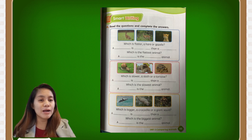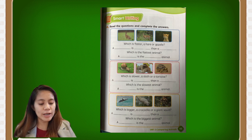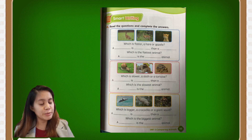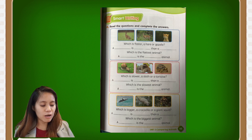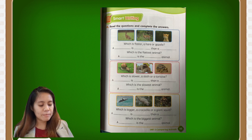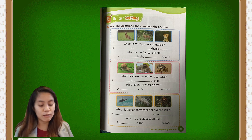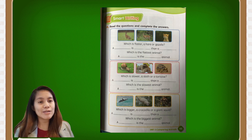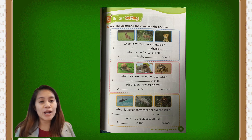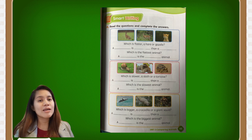For the second picture, we have a snail, a sloth, and a tortoise. And then we have a blue whale, a crocodile, and a giant squid — sorry, it's not a dolphin, it's a blue whale. So you have to write which one is the biggest animal and which is bigger than the other animals.